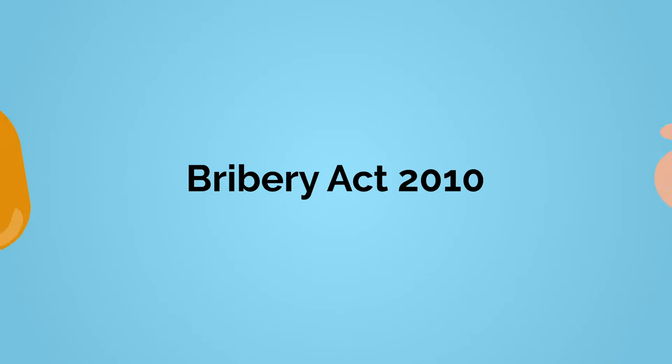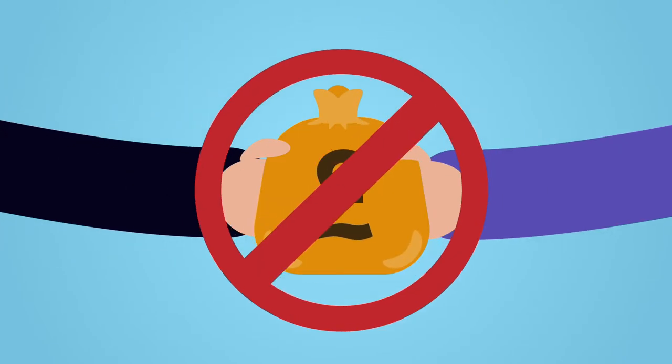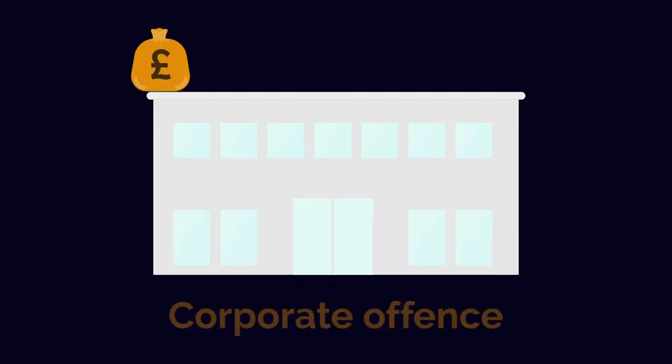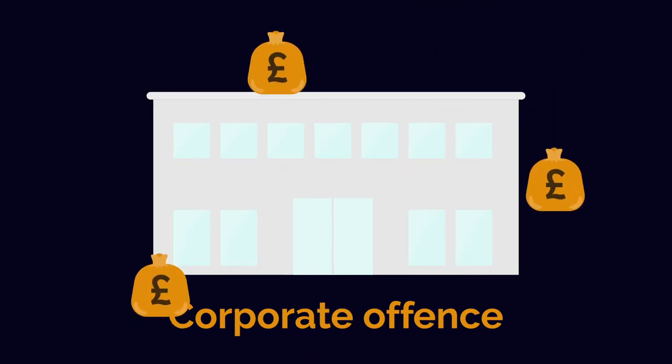In July 2011, a new law was introduced in the UK to combat bribery and corruption. The Bribery Act 2010 outlines four bribery-related offences. The Act banned offering and receiving bribes, as well as giving a benefit to a foreign public official. It also introduced a corporate offence for a company failing to prevent bribery.